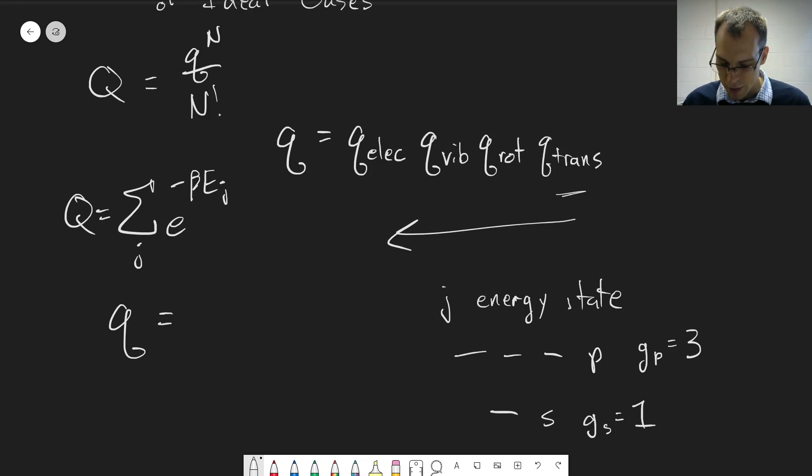But each of these states counts, right? We need to count the px, py, and pz, if we want to label them that way. Each of those states counts towards the partition function. So we need to keep track of that. But rather than writing the same energy three times, what we do instead is that we say, okay,